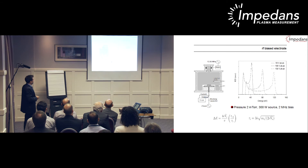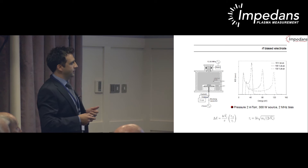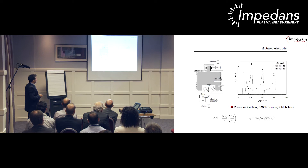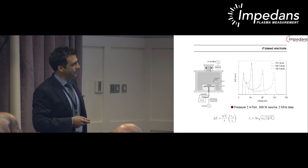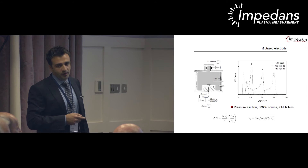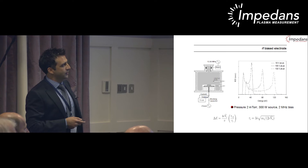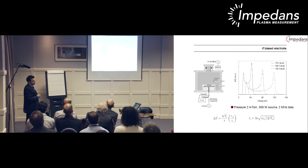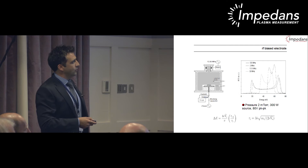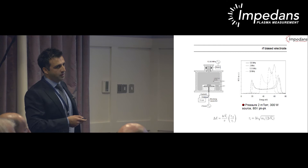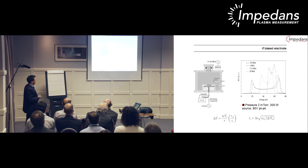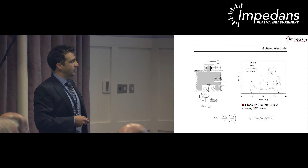An RF bias is then applied to see how it affects the distribution. Theory predicts that RF bias creates a bimodal distribution with energy separation proportional to the RF cycle period and the RF bias potential. Fixing the RF bias frequency and varying the peak-to-peak voltage confirms the two peaks separate as expected. Fixing the RF bias voltage and varying the frequency shows the two peaks come closer together with increasing frequency—consistent with theory that separation is inversely proportional to bias frequency.